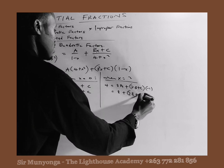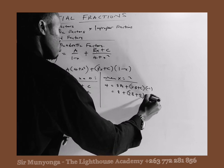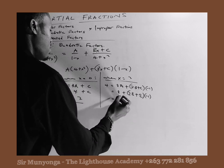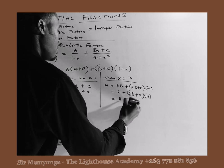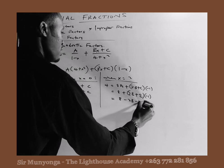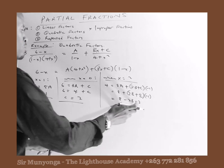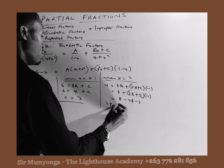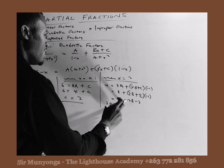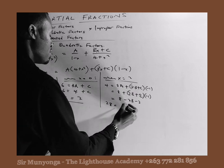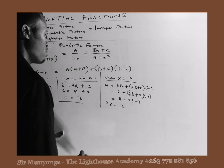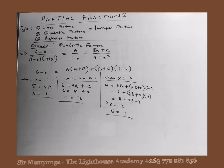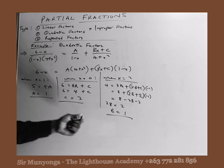Substituting A equals 1 and C equals 2, the right-hand side becomes 8 plus (2B plus 2) times (minus 1), which simplifies to 8 minus 2B minus 2. So 4 equals 6 minus 2B, giving 2B equals 2, and therefore B equals 1. We now have all three constants: A equals 1, B equals 1, and C equals 2.